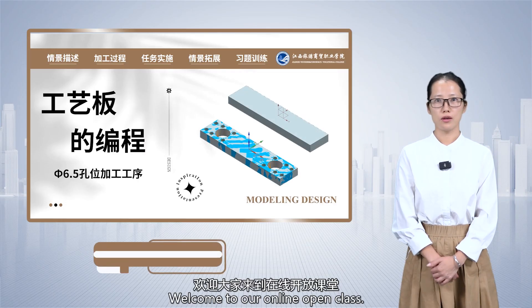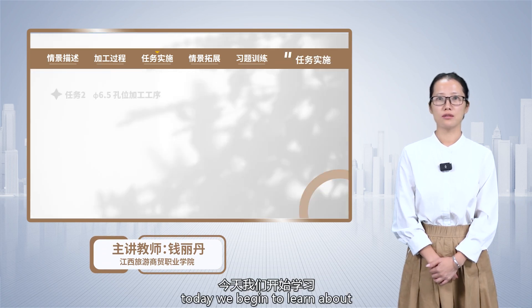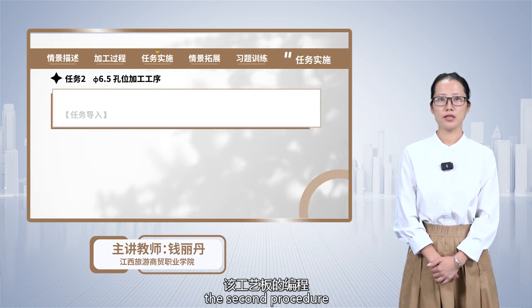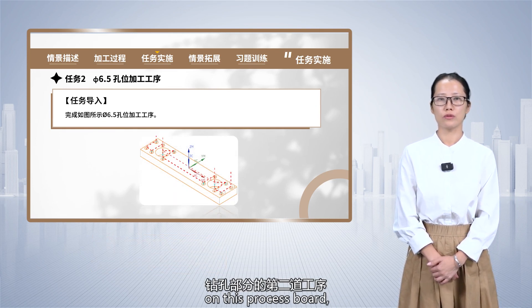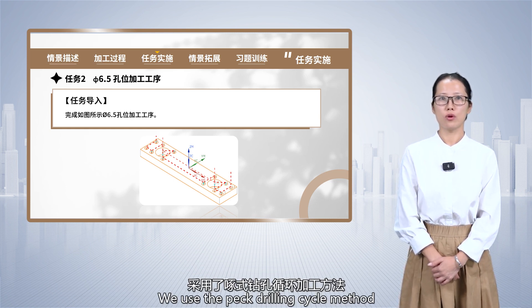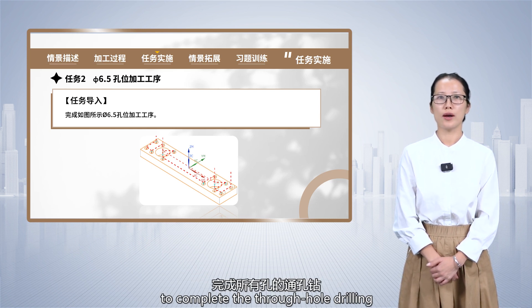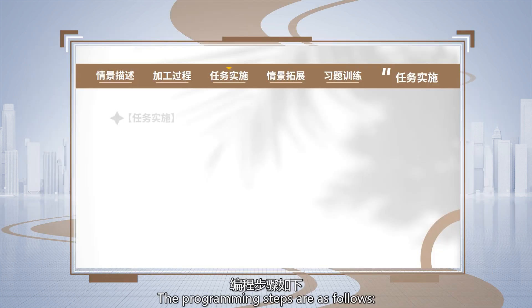Hello everyone, welcome to our online open class. Today we begin to learn about the second procedure of the programming of the drilling part on this process board: 5.6.5 hole making. We use the peck drilling cycle method to complete the through hole drilling for all the holes. The programming steps are as follows.